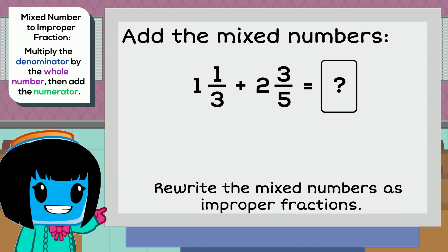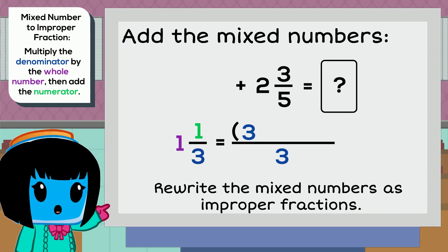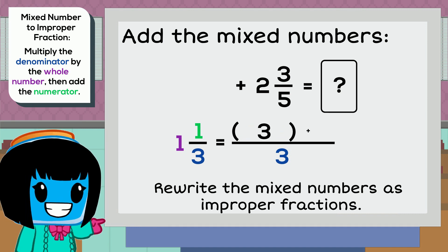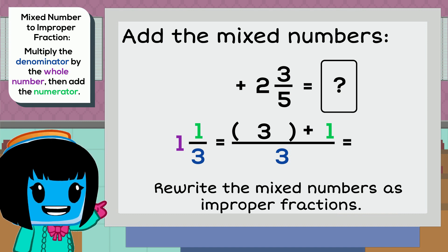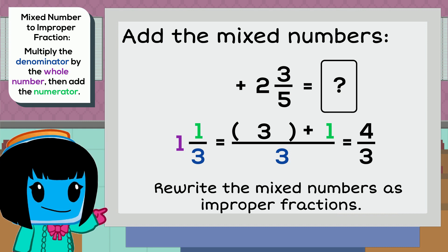So for the first mixed number 1 and 1 third, we're going to multiply the denominator 3 by the whole number 1 and that gives us 3. We then add the numerator 1 to 3, which gives us the improper fraction for 1 and 1 third, 4 thirds.